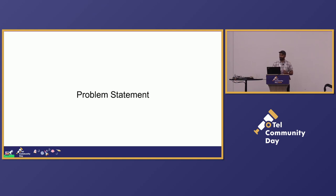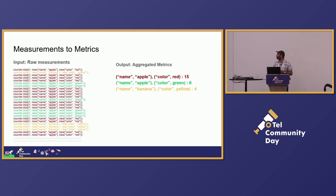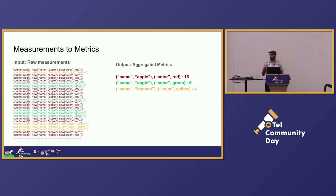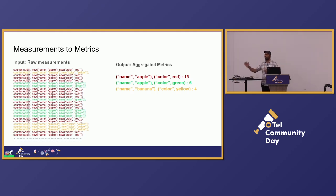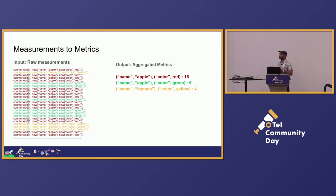Let's start with the problem statement: what is the task before you if you were to implement OpenTelemetry metrics? You have a bunch of raw measurements — someone is using OpenTelemetry to count the number of fruits they have sold, like apple in red color or bananas in yellow. The expected output from a metric system is the summarized data: how many red apples you sold, how many yellow bananas you sold. You get raw measurements and you produce compressed, aggregated metrics.